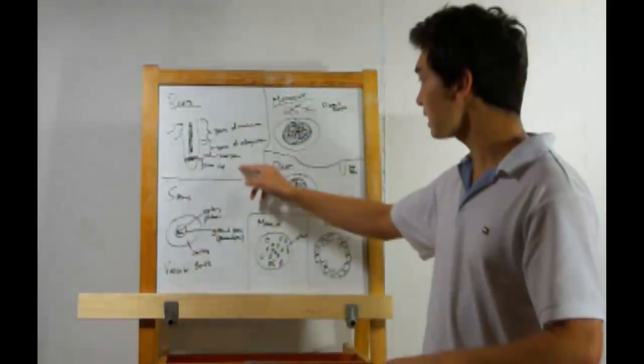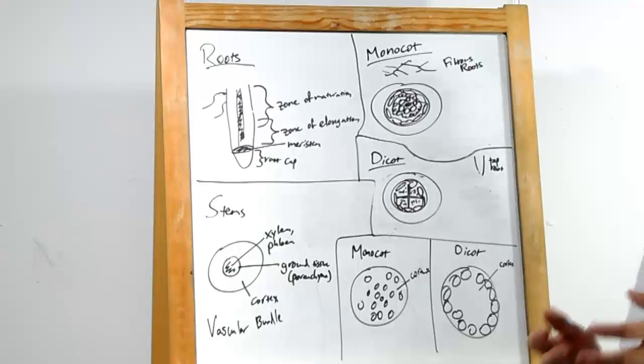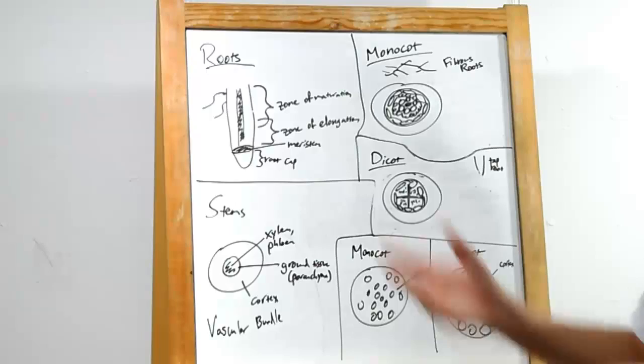Immediately above the root cap, we have the meristem. The meristem produces new cells and allows the root to elongate. Naturally, it's in the zone of elongation, which moves along with the meristem.